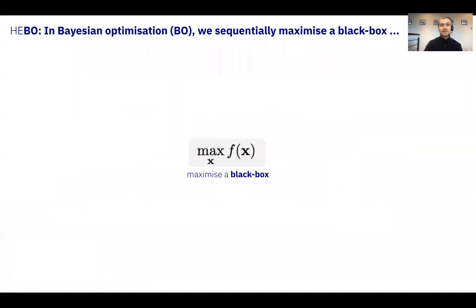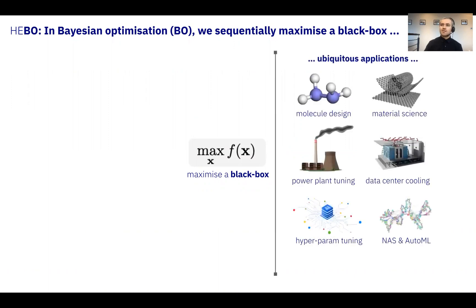To set the scene, our goal is to maximize a black box function by finding a probably mixed variable X. Such a setting is widespread with ubiquitous applications ranging from molecular design to neural architecture search and AutoML.